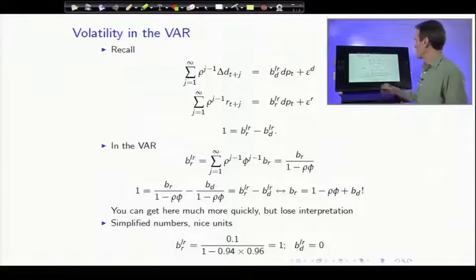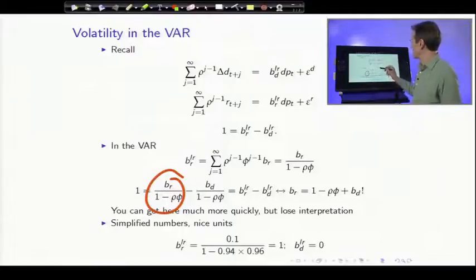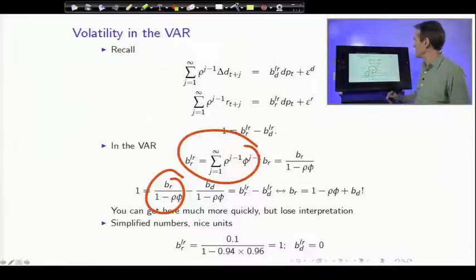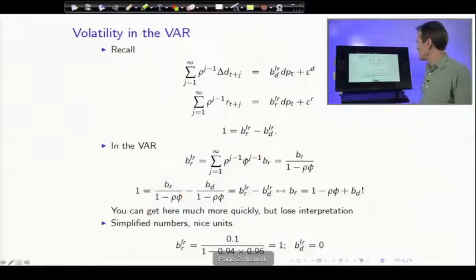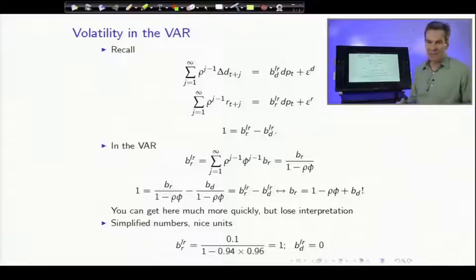But what going through all of it shows you is that these terms here, these combinations, in fact have the interpretation of the long-run regression coefficients, and let us measure those long-run regression coefficients from the vector autoregression. So you can get there much more quickly, but you lose the nice interpretation.